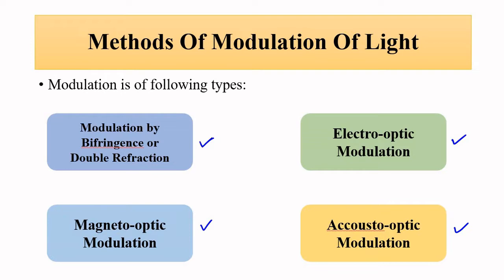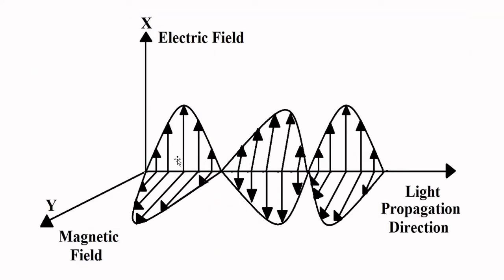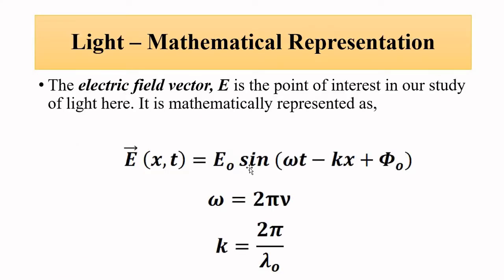The basic concept of modulation is to alter any of the parameters associated with the electric vector of a light wave. We all know light consists of vibrating electric and magnetic field vectors. We are only interested in the electric field vectors because they are responsible for every electrical phenomenon. Modulation basically involves changing any of the parameters such as amplitude, frequency, or phase.